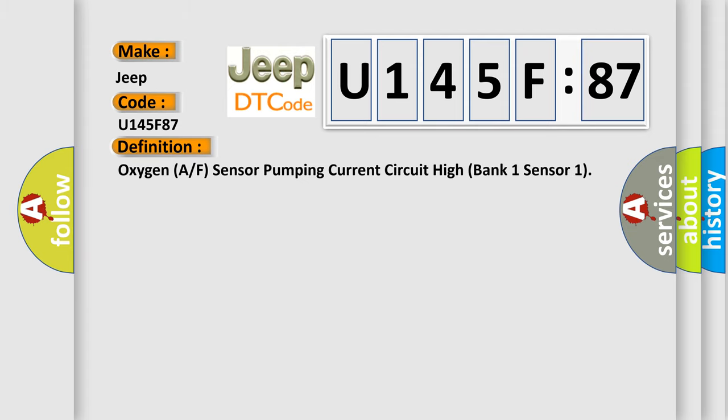Oxygen A or F sensor pumping current circuit high bank 1 sensor 1. And now this is a short description of this DTC code.